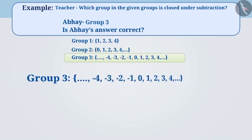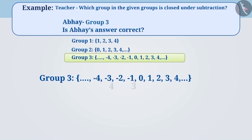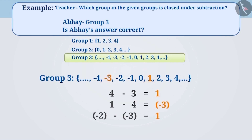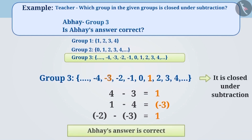Now we will talk about group 3. It is a group of integers. Take any two numbers from this group and subtract them. The numbers obtained as a result are 1, minus 3, and 1 respectively, which are all part of this group. Therefore, we can say that group 3 is closed under subtraction. So now we know Abhay's answer is correct.